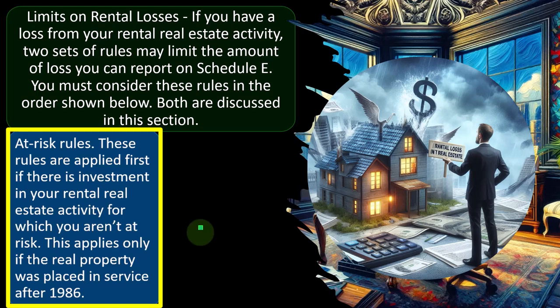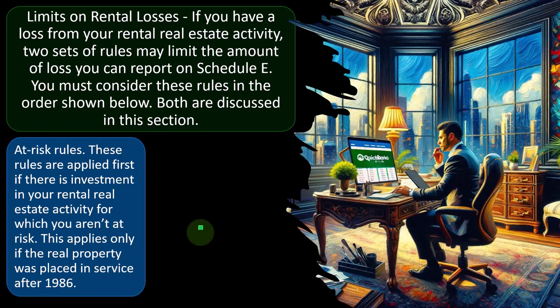Typically with rental property, you're at risk because you took out a loan to purchase the property. If you default on the loan, you're at risk and the property is collateral. But if there's a situation where you're not at risk for a default, the IRS will be more likely to limit the losses because you look like a more passive investor. This applies only if the real property was placed in service after 1986.